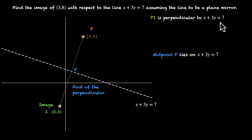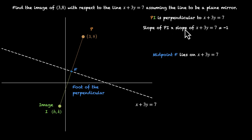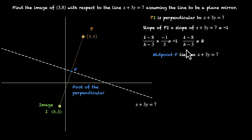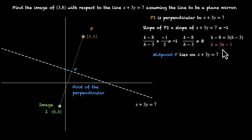PI is perpendicular to x plus 3y equals 7. The slope of this line is minus 1 by 3. So the slope of PI times the slope of this line equals minus 1. Slope of PI is (k minus 8) by (h minus 3), and slope of the mirror is minus 1 by 3. Their product equals minus 1. Simplifying: (k minus 8) by (h minus 3) equals 3, which gives k minus 8 equals 3h minus 9, so k equals 3h minus 1. This is our first equation.